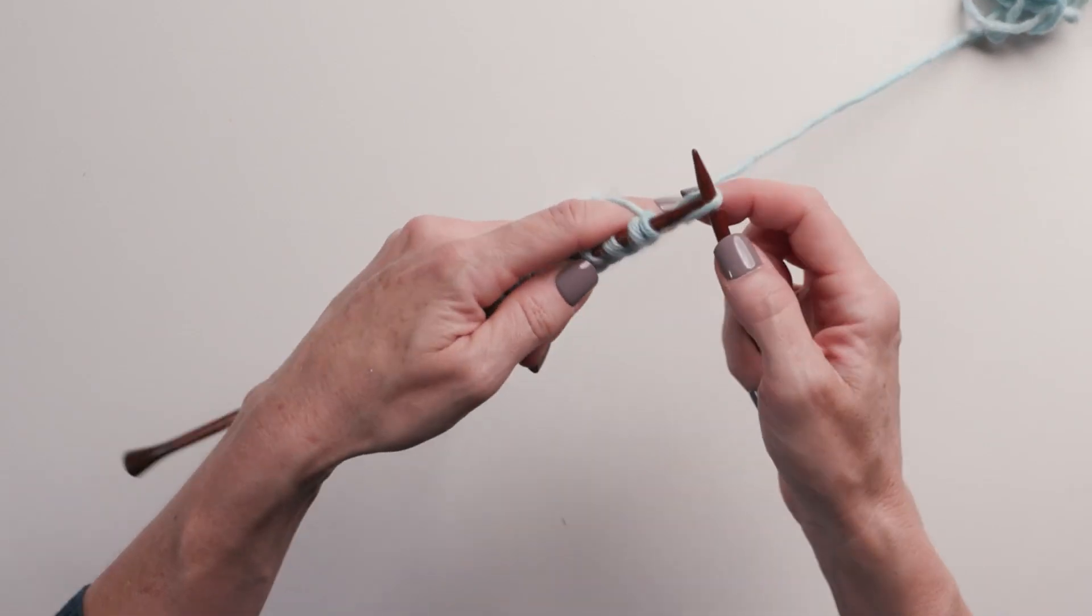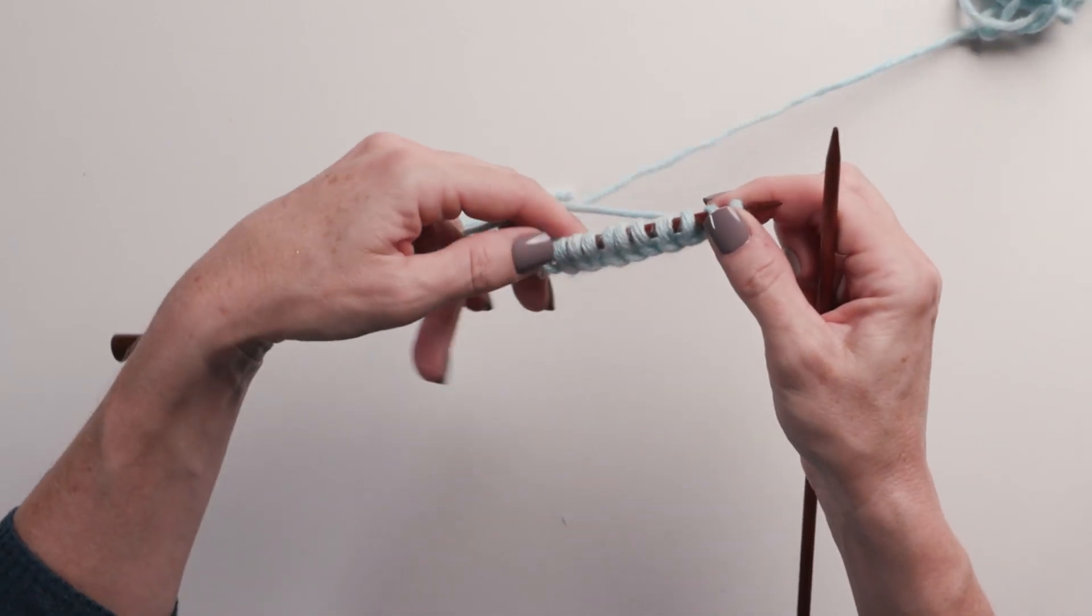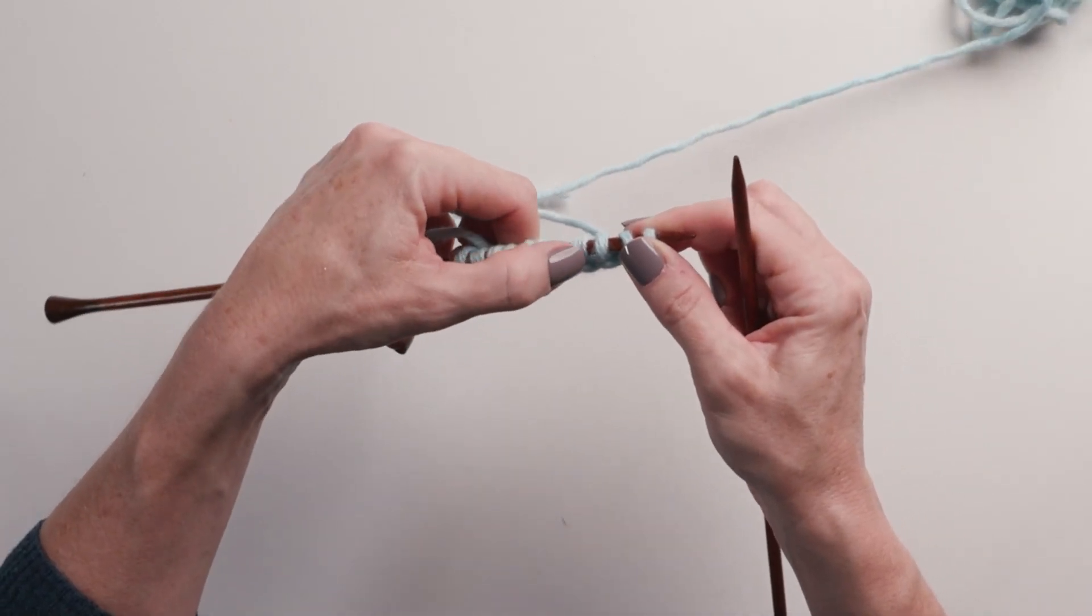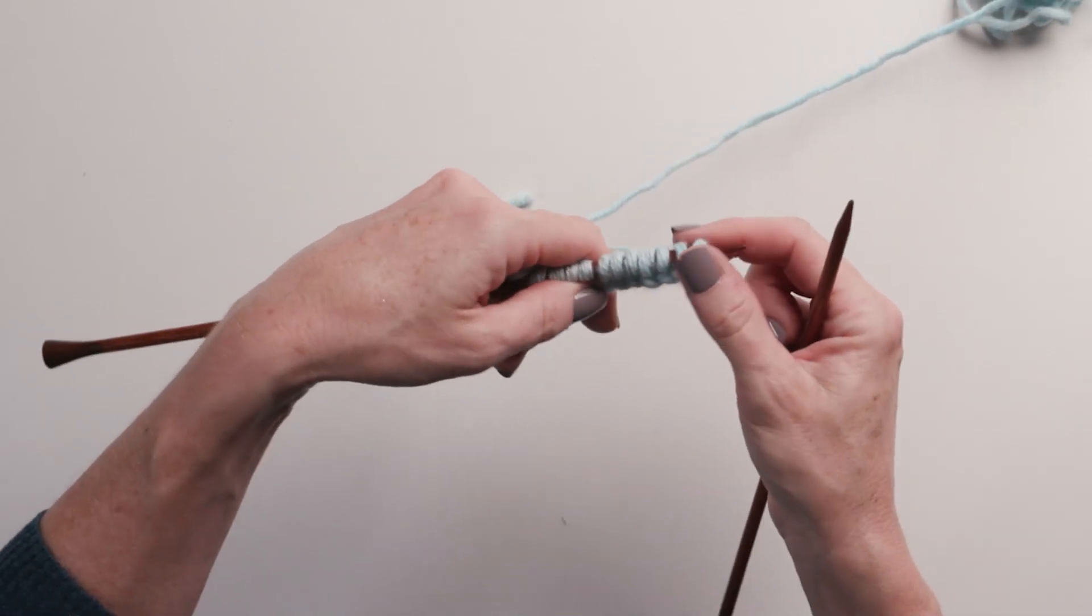So again, go through on the needle. One, two, three, four, five, six, seven, eight, nine, ten. I knit eleven. That's okay.